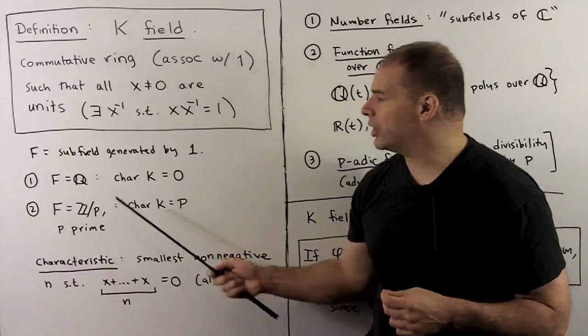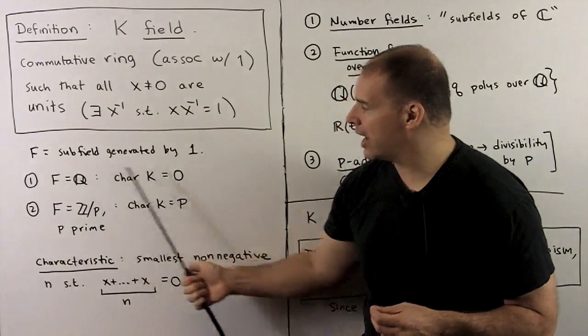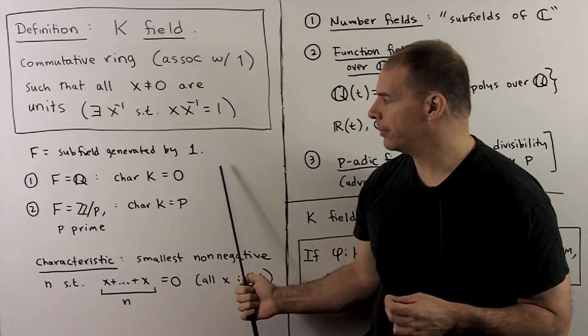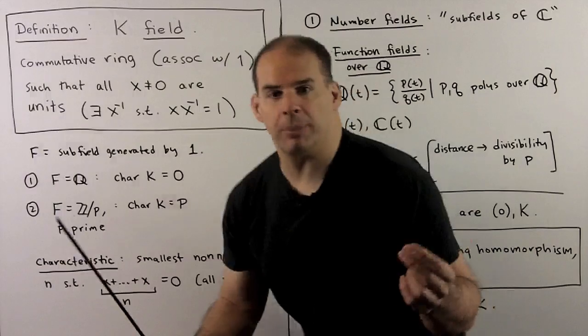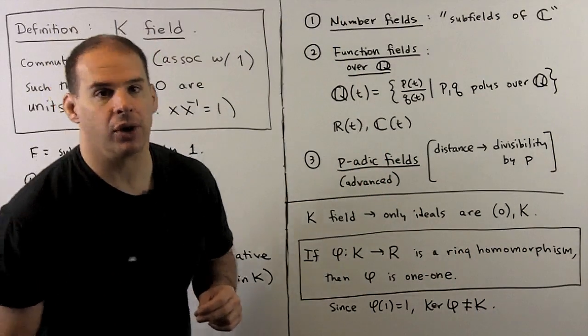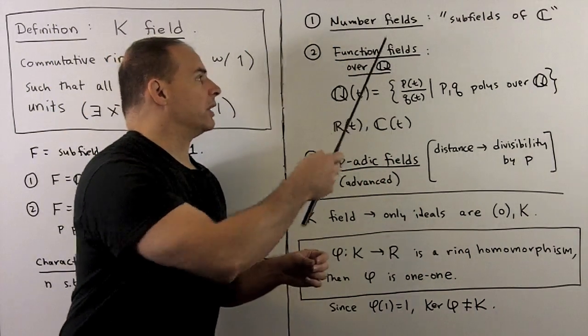If we put all the fields of the second type together, we call these the fields of positive characteristic. We're mostly interested here in fields with characteristic zero. For examples of fields with characteristic zero, we have number fields.